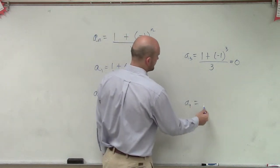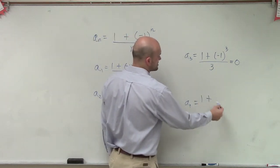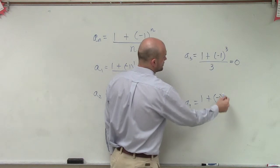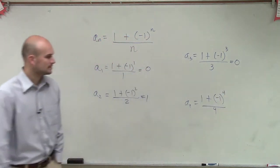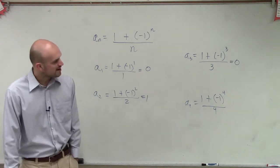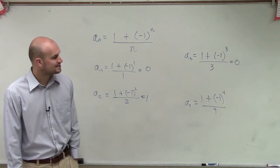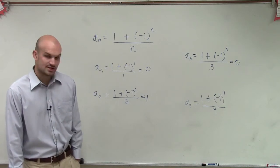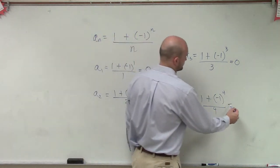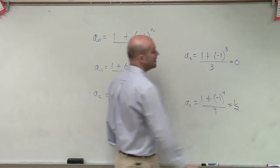And then we have a_4, which is going to be 1 plus negative 1 to the fourth divided by 4. So we have 1 plus negative 1 raised to the fourth, which is now going to be a positive 1. 1 plus 1 is 2. 2 divided by 4 is 1 half.